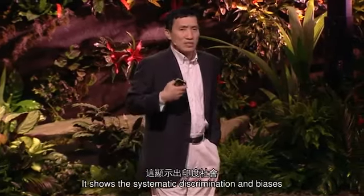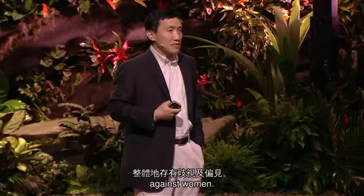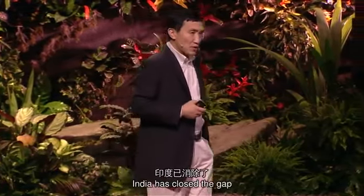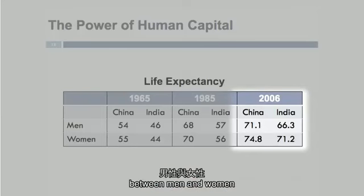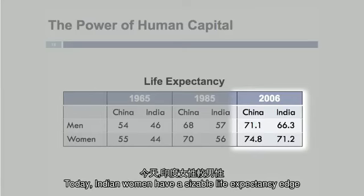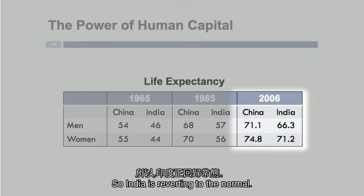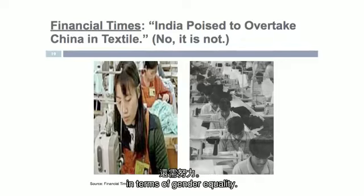This pattern shows the systematic discrimination and biases in Indian society against women. The good news is that by 2006, India had closed the gap between men and women in terms of life expectancy, and today Indian women have a sizable life expectancy edge over Indian men. India is reverting to the normal, but still has a lot of work to do in terms of gender equality.